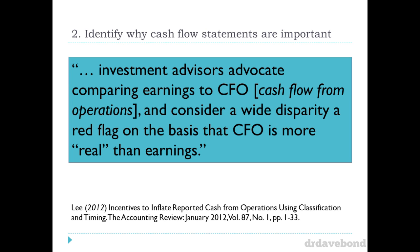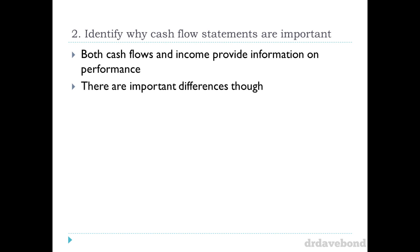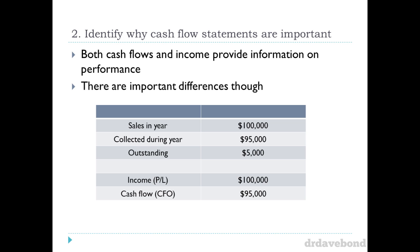Because accounting has a huge amount of subjectivity in it — and that's what you should be reflecting on. We've looked at how you come up with property, plant and equipment; we've looked at provisions for long service leave; financial instruments; leases. In a lot of this stuff there are huge amounts of subjectivity, estimations, and professional judgment. There's good reason why that happens, but it does also give rise to a concern. Both cash flows and income provide information on performance.